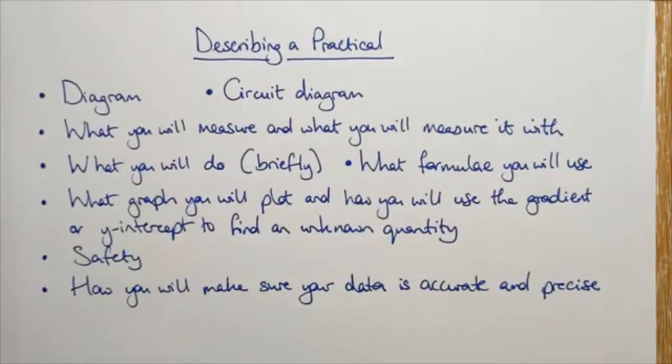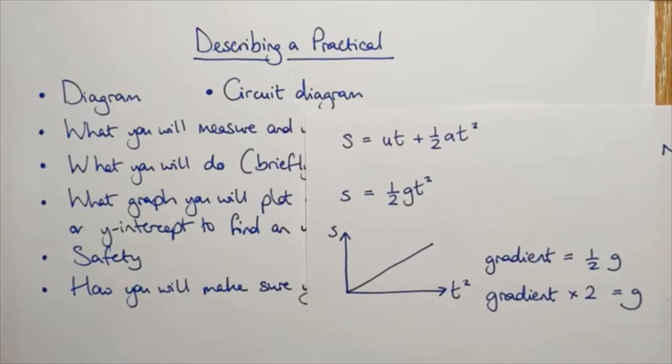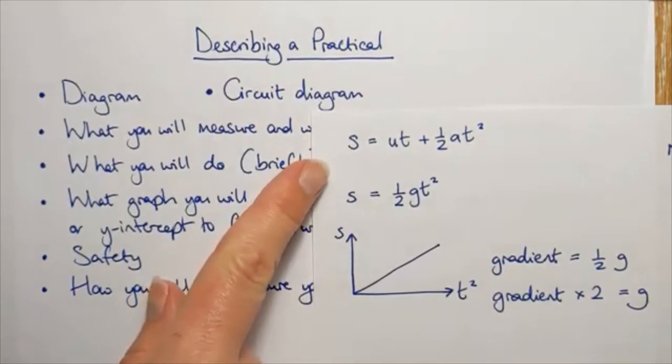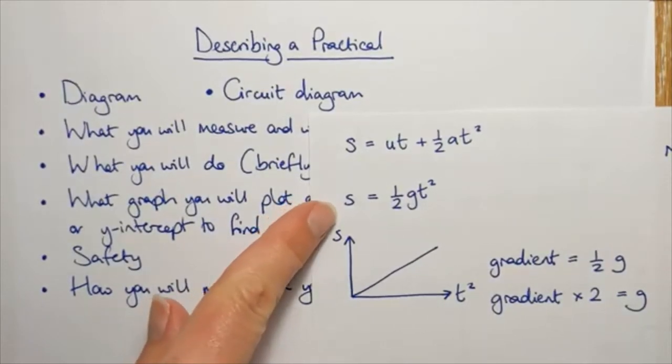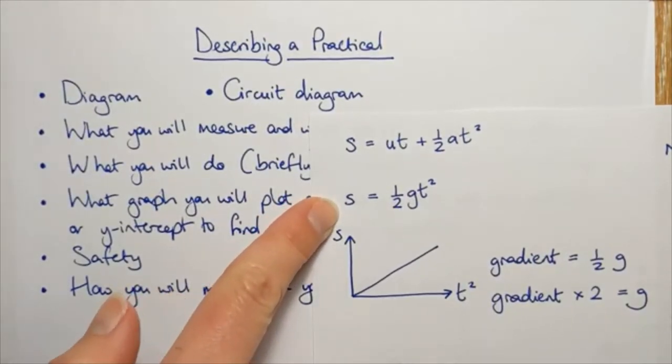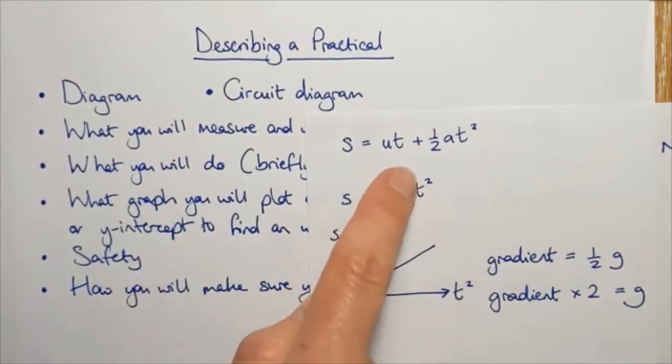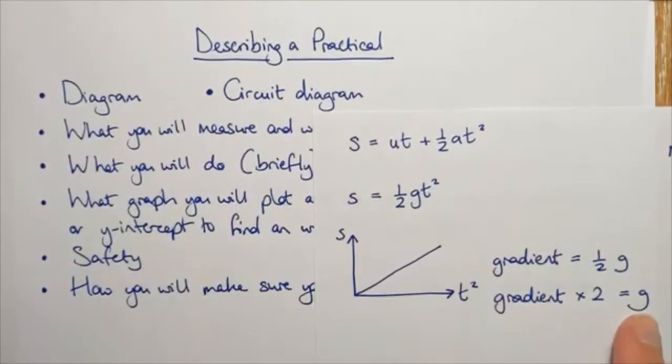I don't need any formula here. Then what graph are we going to draw? The relevant formula here is s equals ut plus a half at squared, but u is zero and the acceleration is g. So that gives us this formula. That means we're going to plot this graph. The gradient will be a half g and then you must write gradient times two equals g. Don't leave it as gradient equals this. Rearrange for the thing you're interested in.